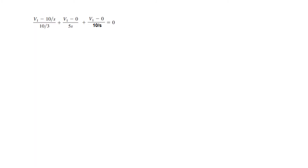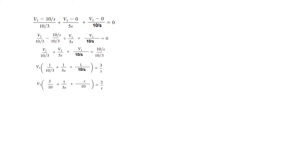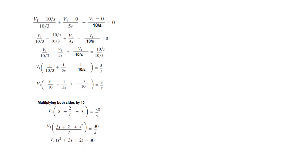Now we simplify. Following the steps: taking terms to the right-hand side, factoring out v1, and multiplying both sides by 10 to simplify. The s terms cancel, and from this we find v1 = 30 / (s² + 3s + 2).